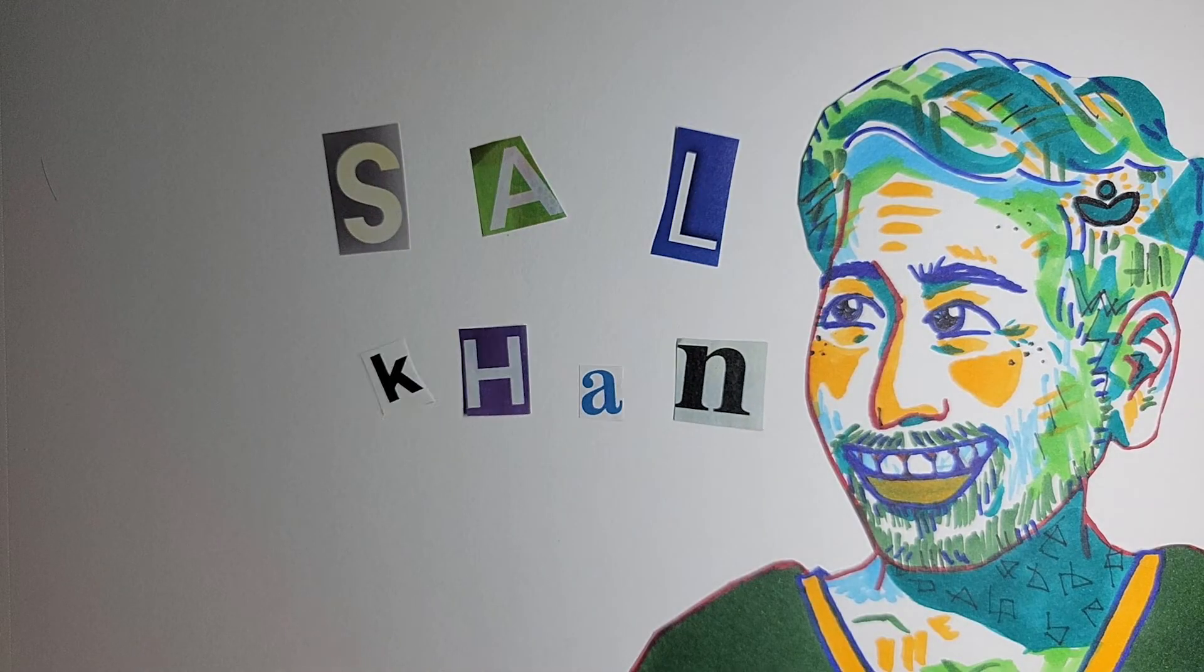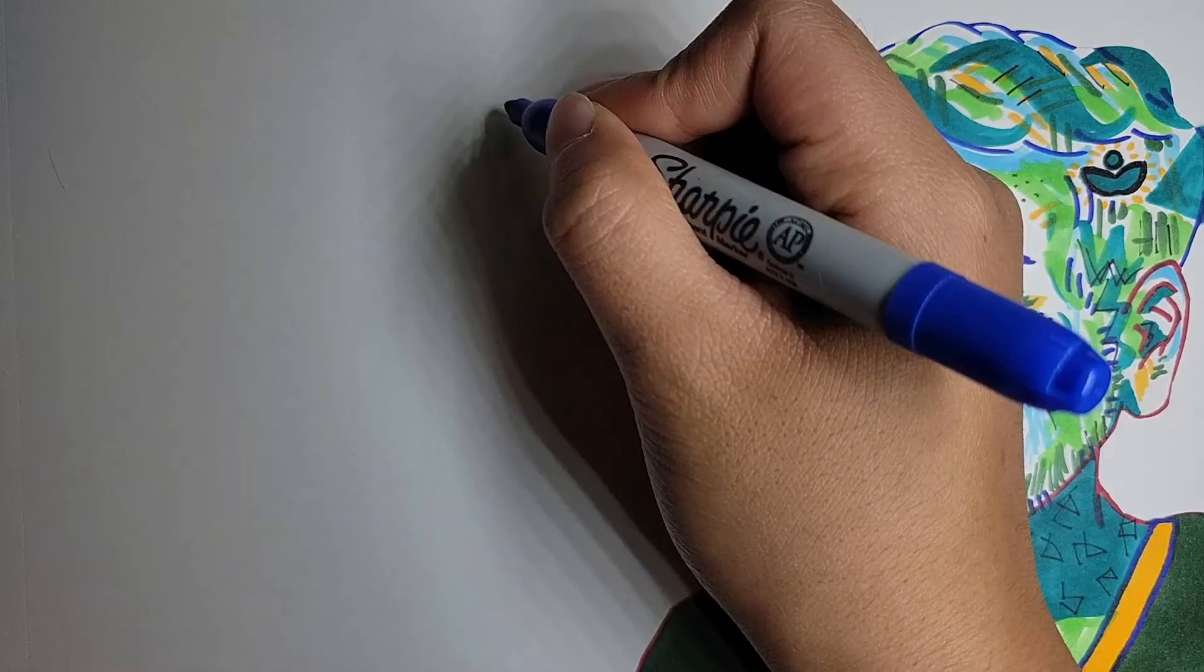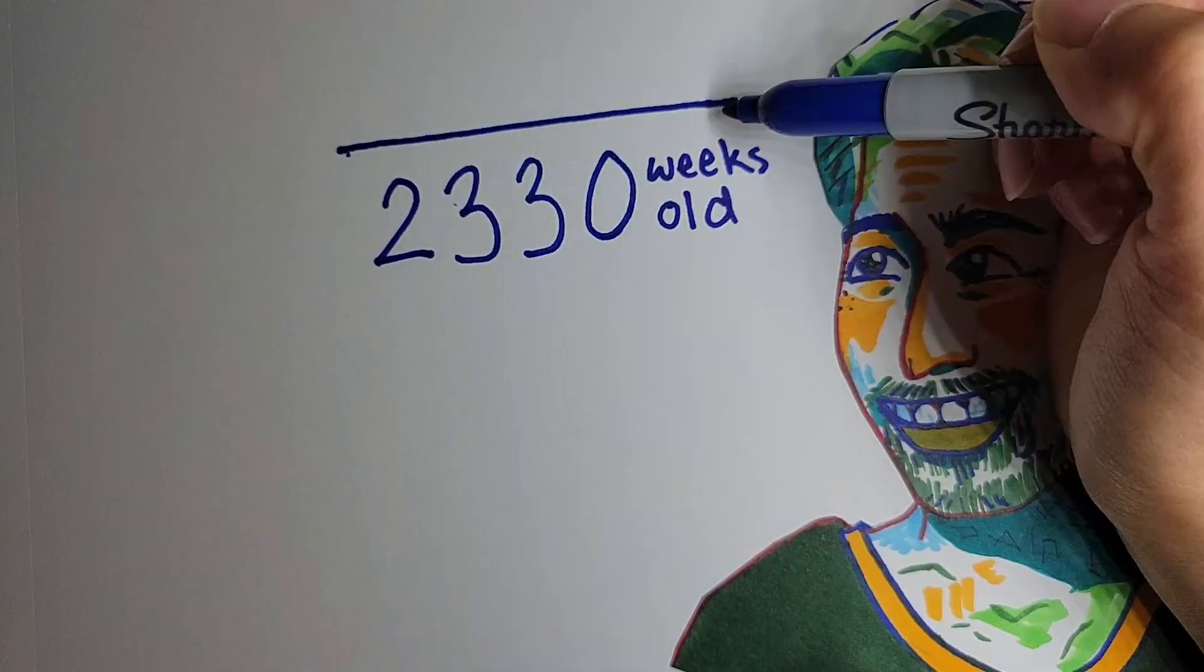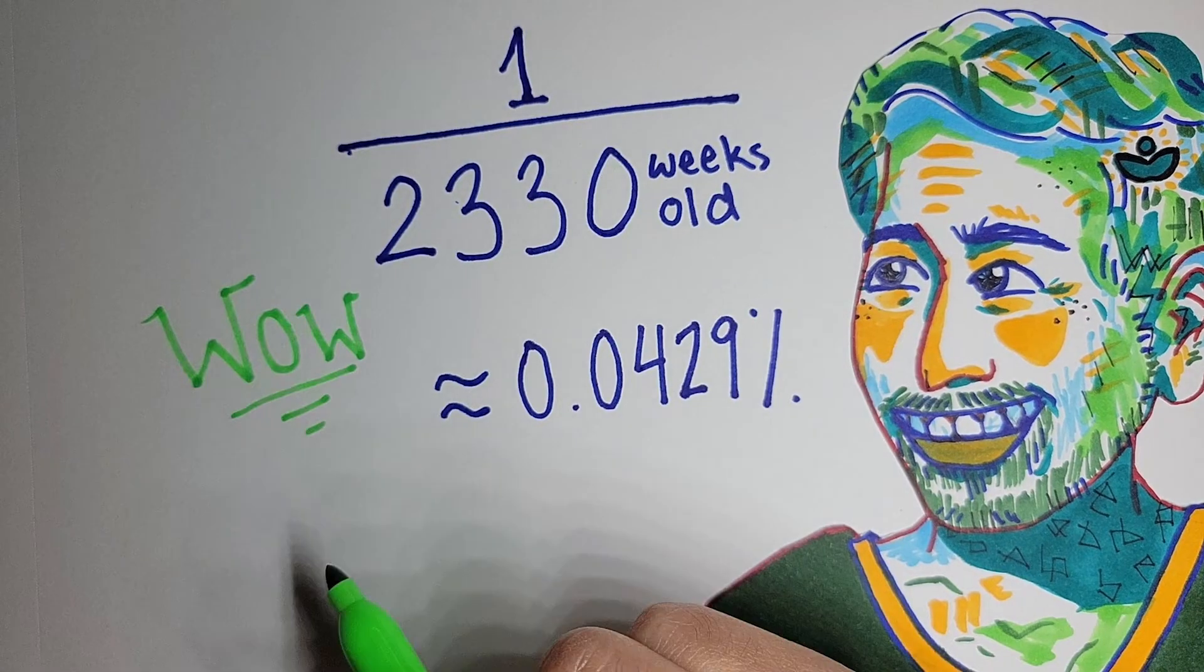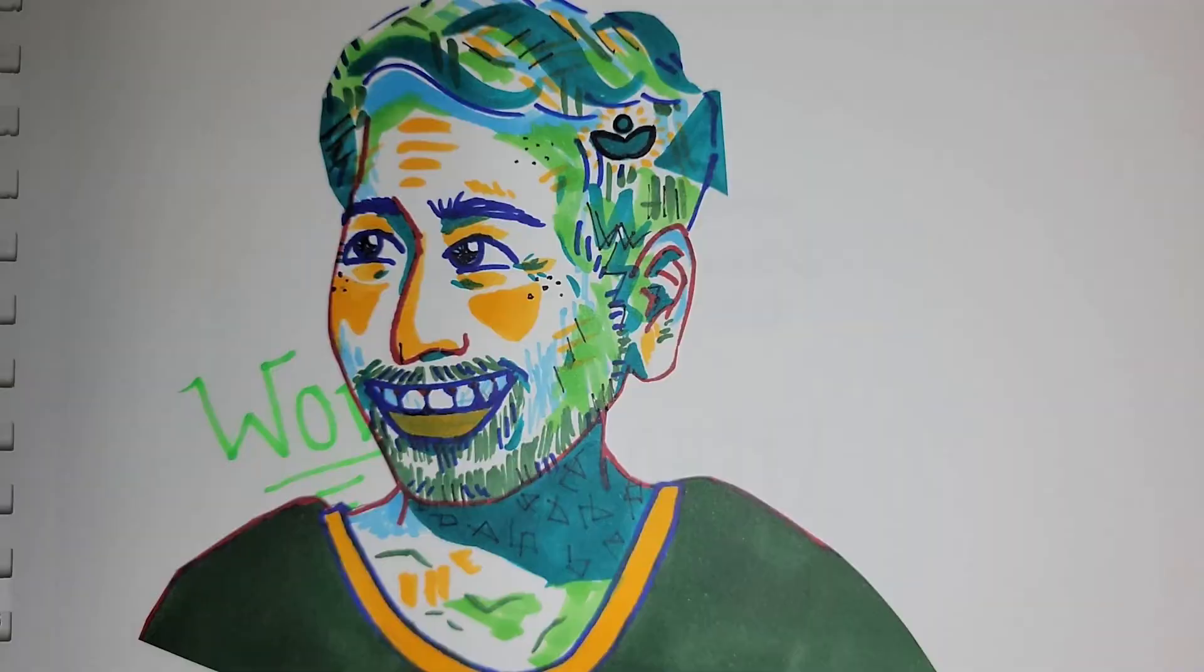You may be more familiar with the name Sal Khan. Well, Mr. Khan has been alive for nearly 2,330 weeks. This means that one week takes up 40 thousandths of his entire life.